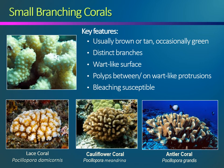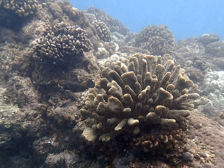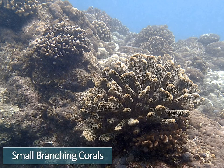Small branching corals are also a favorite food choice of the predatory crown-of-thorns sea star. If you said small branching corals, you are correct. Small branching corals are easy to find on shallow reefs around the main Hawaiian Islands. They often prefer open basalt substrates and thrive in high-wave energy environments.